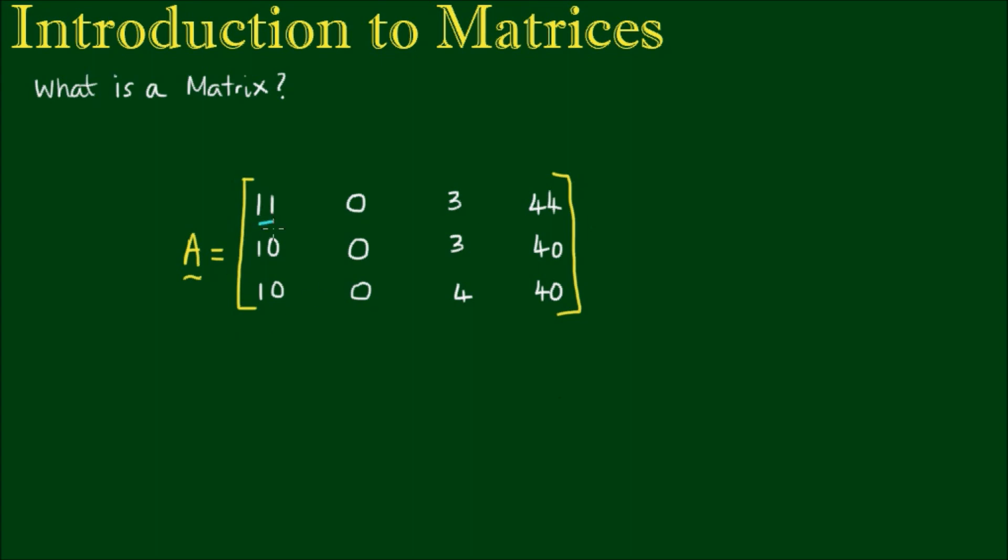Each of these numbers in the matrix is called an entry or an element. To use element notation, because we've called this matrix capital A, we'll use a little a to denote the element. But that's not enough because we've got 12 other elements in this matrix, so we need to specify which one it is. The number 11 here is in row 1.